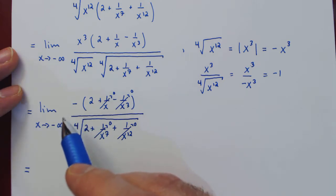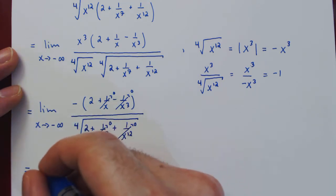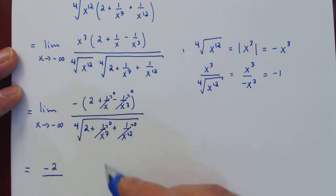So what are we left with? On the numerator, negative 2. On the denominator, the fourth root of 2, or as an exponent, 2 to the 1/4.